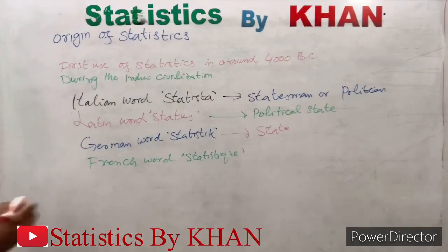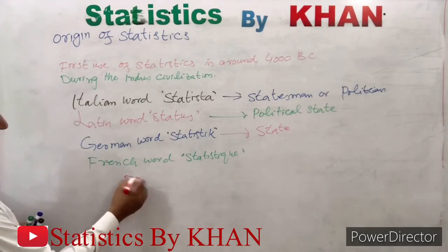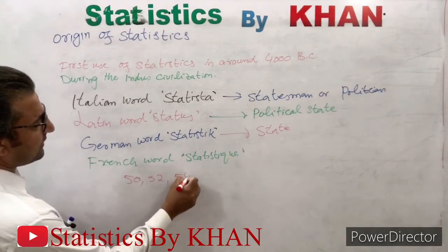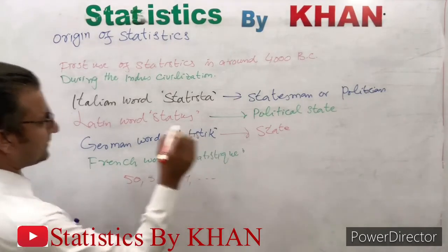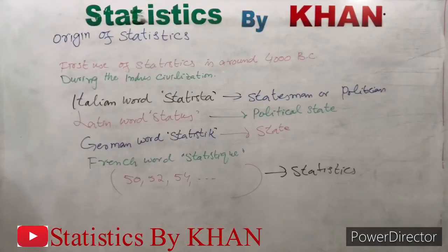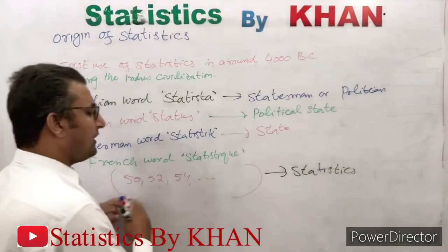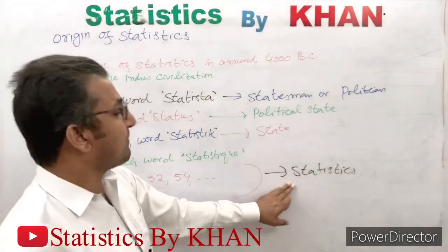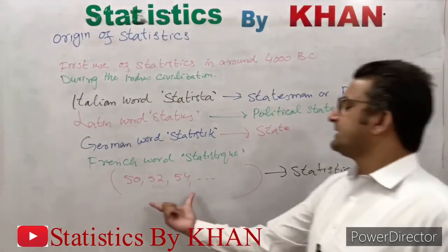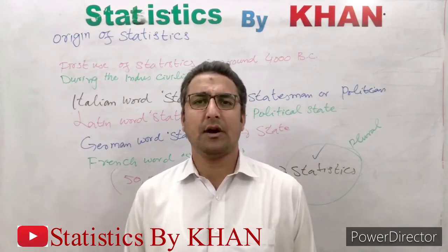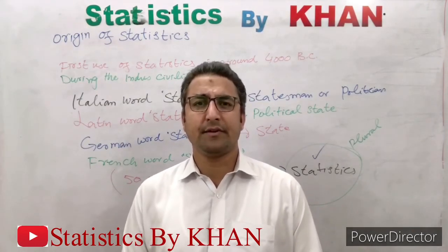In early days, only numerical facts were called statistics. For example, if the population of a state was 50,000 one year, 52,000 the next year, and 54,000 the following year — these numerical figures were simply called statistics. This concept is still alive in today's world; such data sets are still called statistics, and in this context the word 'statistics' is used in its plural form.